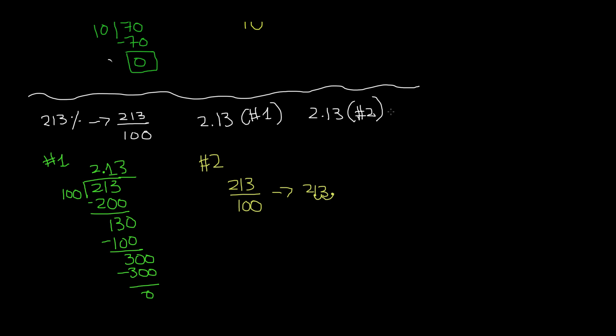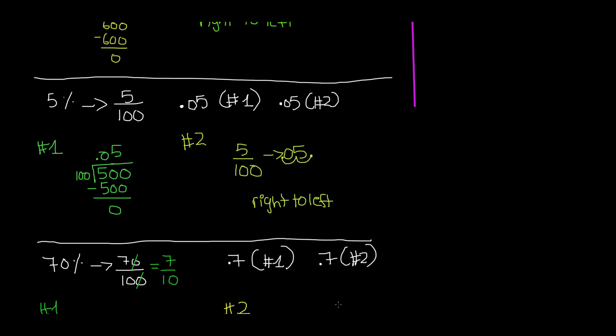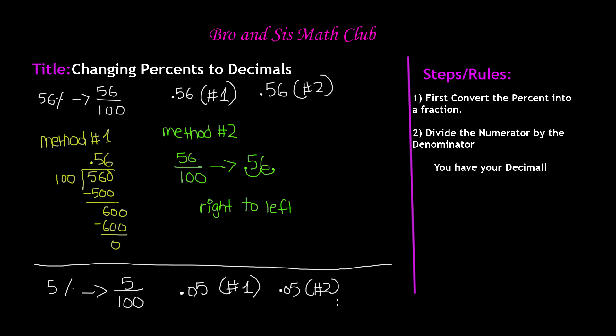That's all for this video. I hope you learned how to change a percentage into a decimal. It's really simple: there are only two rules — convert the percentage into a fraction and divide the numerator by the denominator. I showed two methods and different situations: two-digit percentages like 56%, one-digit like 5%, percentages ending in zero like 70%, and percentages greater than 100 like 213%. The steps remain the same. We'll see you guys next time!